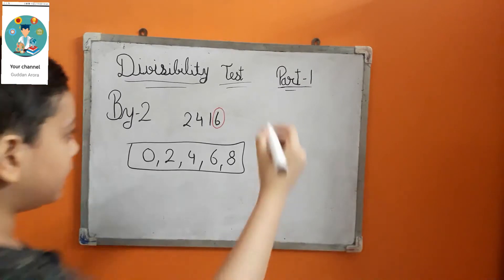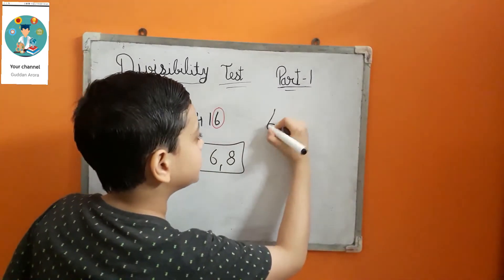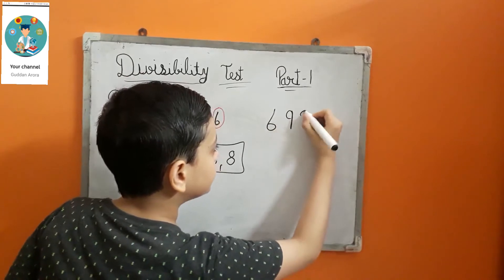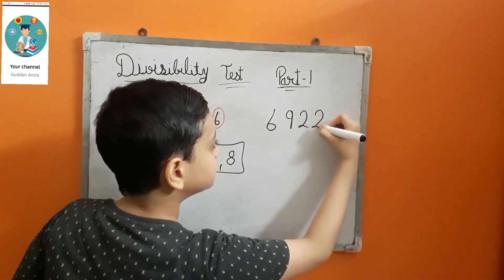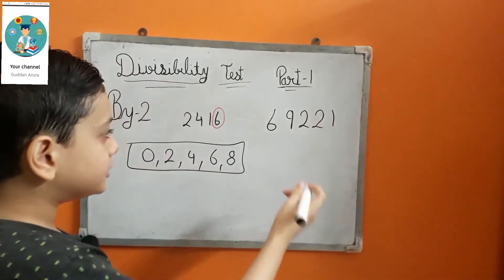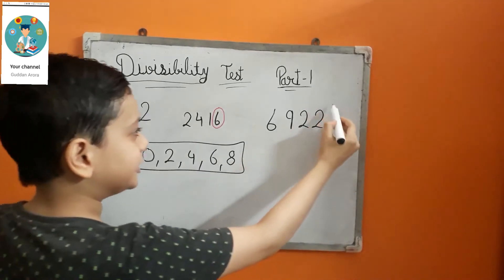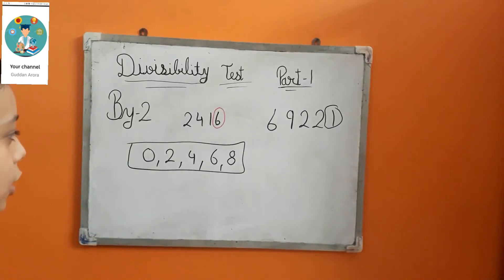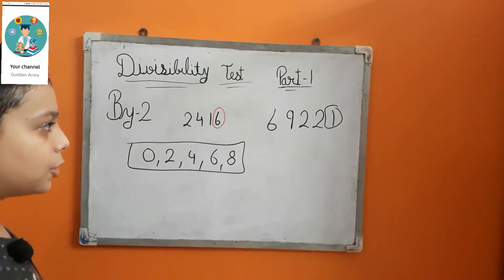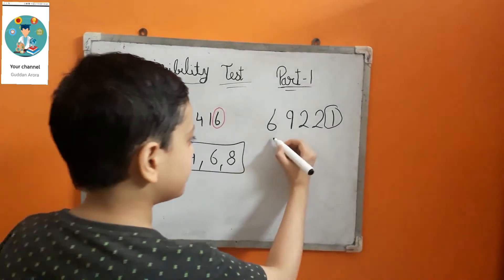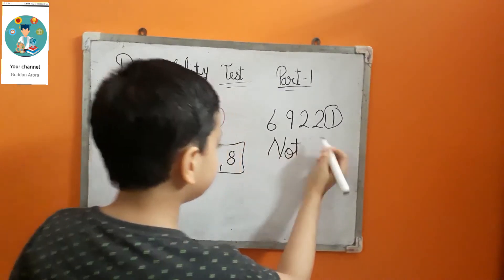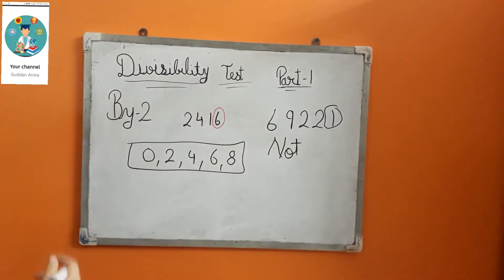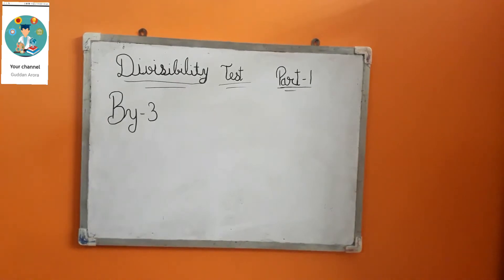Let's take one more example: 69221. The ones digit is 1, and it is not an even number — not 0, 2, 4, 6, or 8 — so this number is not divisible by 2. Now we will discuss divisibility by 3.